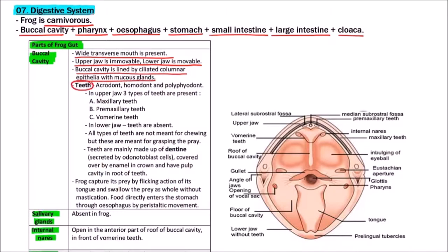Now the teeth. Teeth are acrodont, that is they are directly evolving from the jaw bone, homodont meaning all teeth are alike, and polyphiodont meaning they arise many times in life. In upper jaw three types of teeth are present: maxillary teeth, pre-maxillary teeth, and vomerian teeth. Here in the diagram we can see the maxillary teeth, pre-maxillary teeth, and vomerian teeth near the vomer bone.